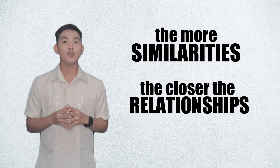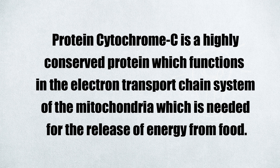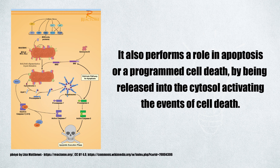The more similarities, the closer the relationships. One of these is the protein cytochrome C, an important enzyme found in virtually all organisms. It is a highly conserved protein which functions in the electron transport chain system of mitochondria, which is needed for the release of energy from food. It also performs a role in apoptosis — programmed cell death — by being released into the cytosol, activating the events of cell death.